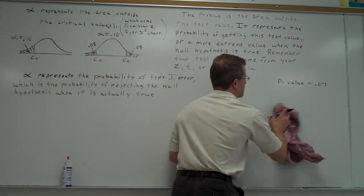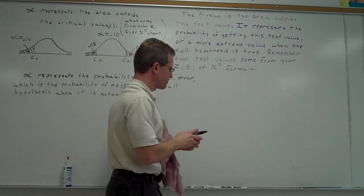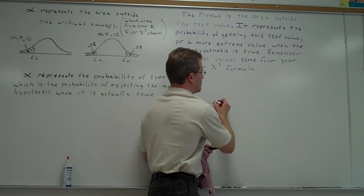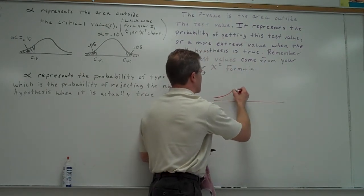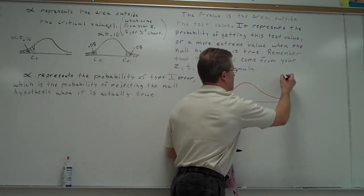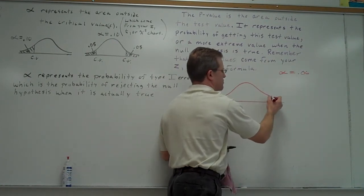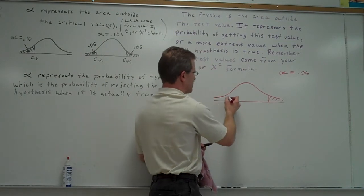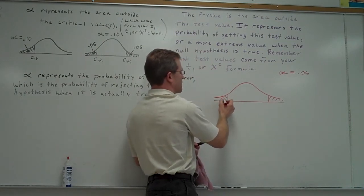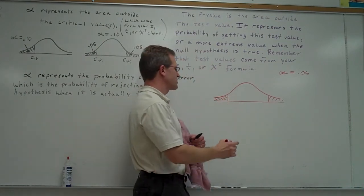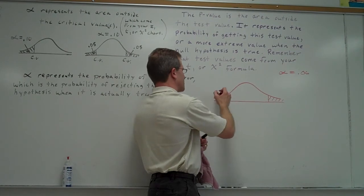What if it's two-tailed? One more example. What if it's two-tailed and let's say alpha is 0.06? So what percent would be in each tail? 3%. That means 3% is in each tail.